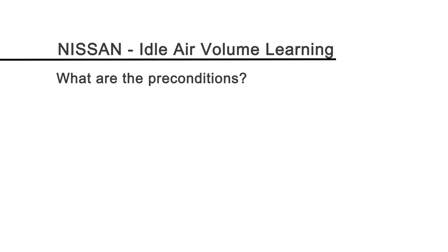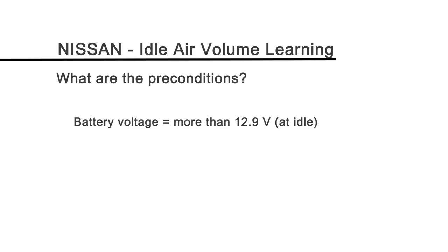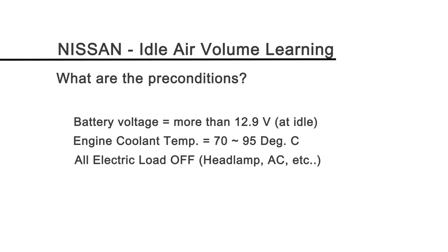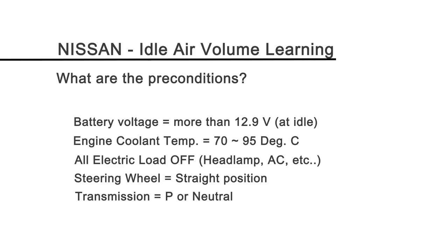Here are the preconditions that need to be satisfied. You need to have battery voltage greater than 12.9 volts. Warm up the engine to normal operating temperature between 70 to 95 degrees Celsius. All electric loads or accessories such as air conditioning and headlamps should be turned off. Steering wheel to straight position, transmission in park or neutral, and the vehicle must be stopped.